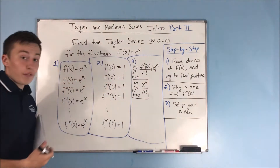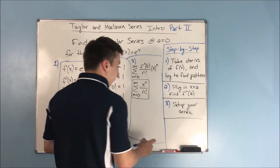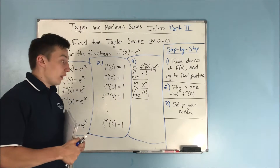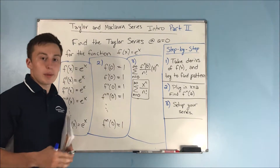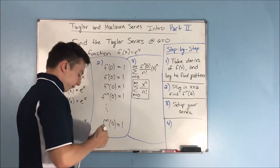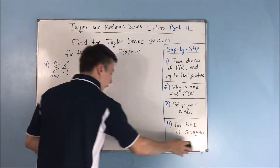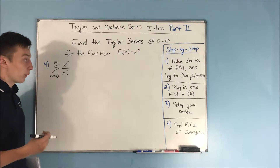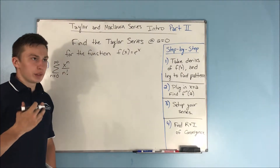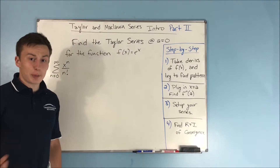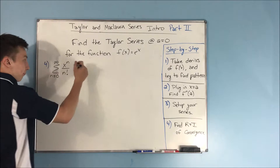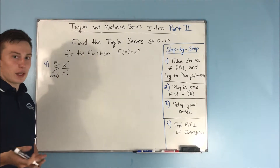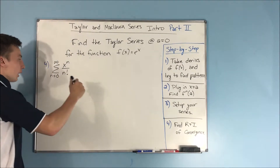Lastly, you're going to want to find your radius and interval of convergence. This may be something they ask for — they may ask for just one, the radius or the interval, or they may just say to set up your series. This is not something we can do by finding a common ratio; it's not a geometric power series. So what we're going to have to do is use the ratio test. We're not going to want to use the root test because we have that n factorial that's not to the nth power.